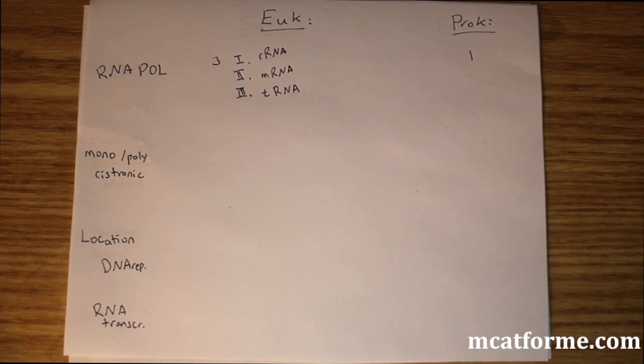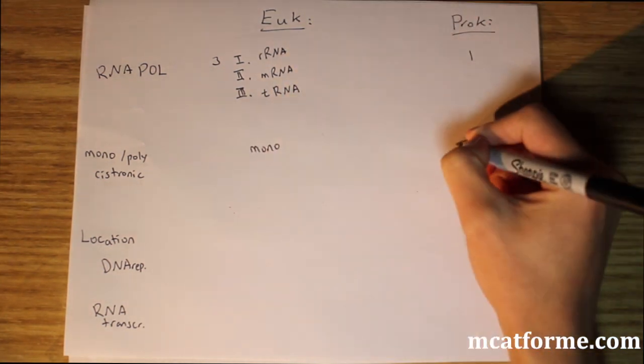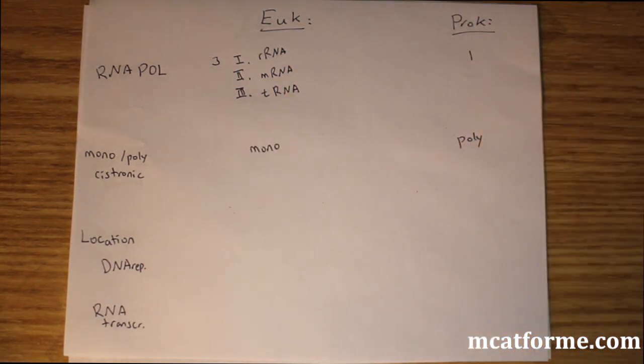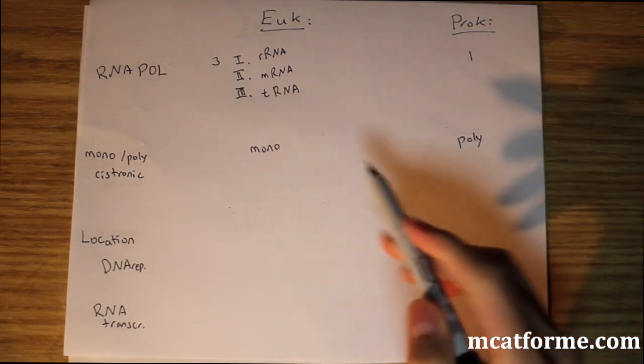Now mono versus polycystronic. Monocistronic means one gene translates to one protein. Polycystronic means one gene can translate to multiple proteins depending on how many open reading frames there are. Eukaryotes are monocistronic and prokaryotes are polycystronic. That should make sense—one gene correlates to one protein.